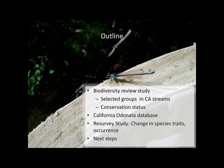I'll also tell you about the California Odonata database that I developed as part of CalBUG, which is a project to digitize entomology collections in California, and go over some of the results from a resurvey study looking at changes in species traits and occurrence rates over time in California, and how we might use this data to focus conservation assessments for groups that haven't been as well studied. I'll conclude with some next steps in doing that.